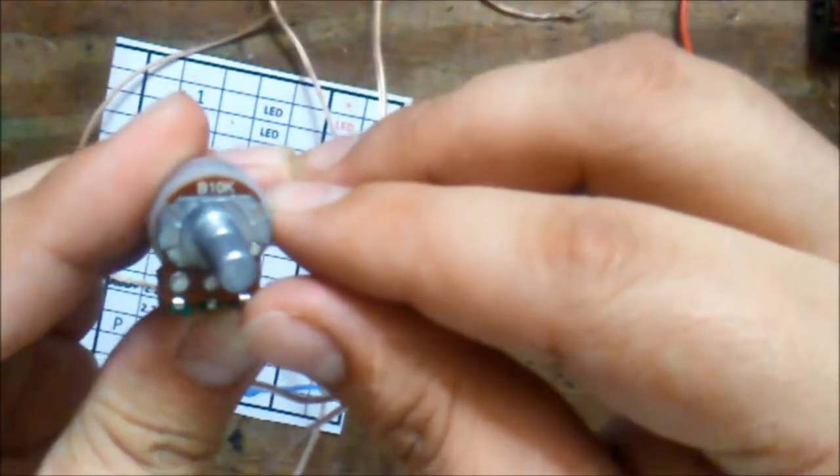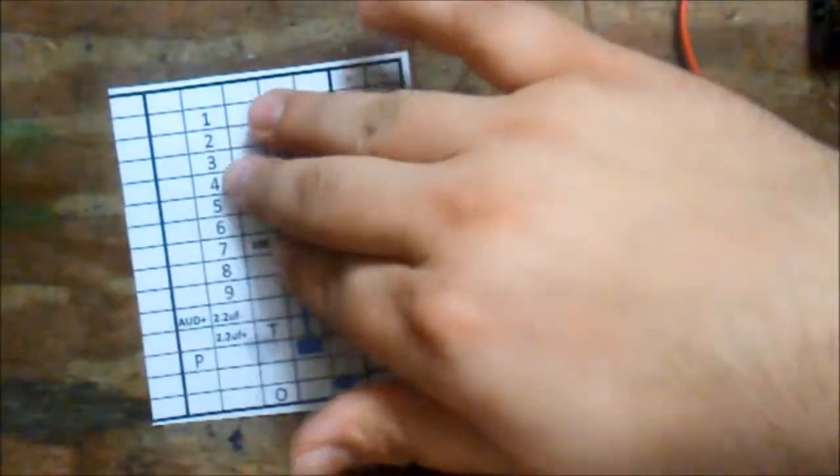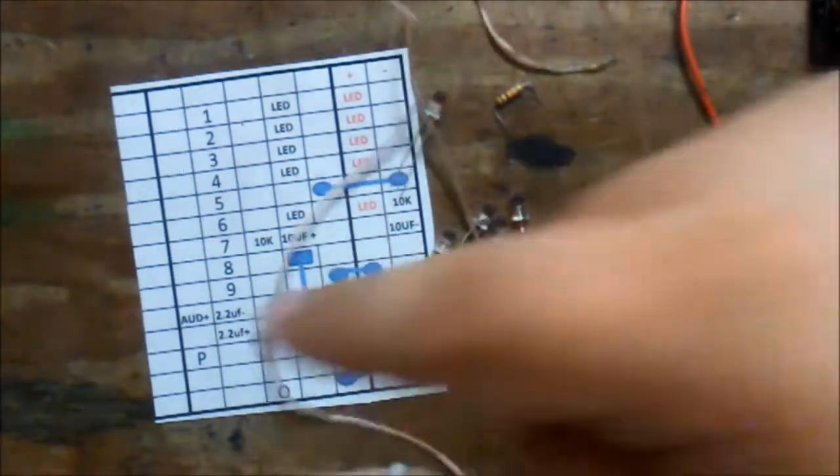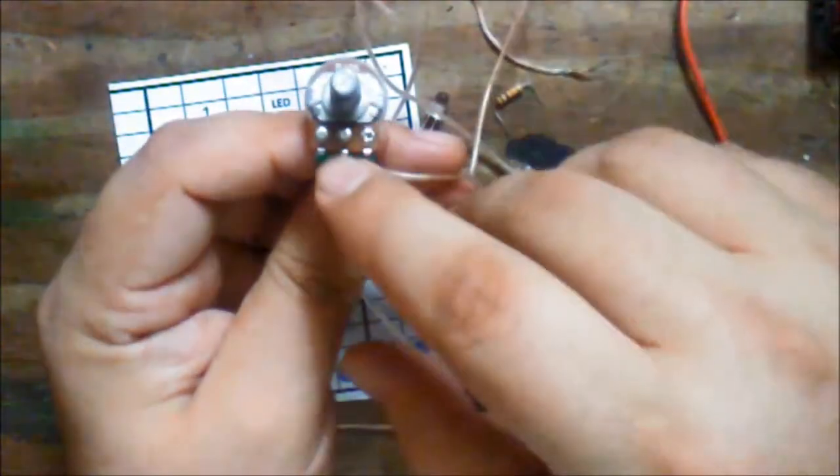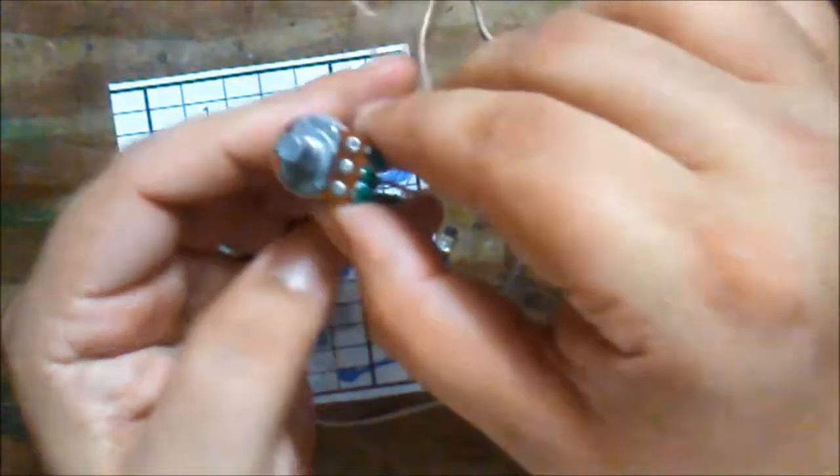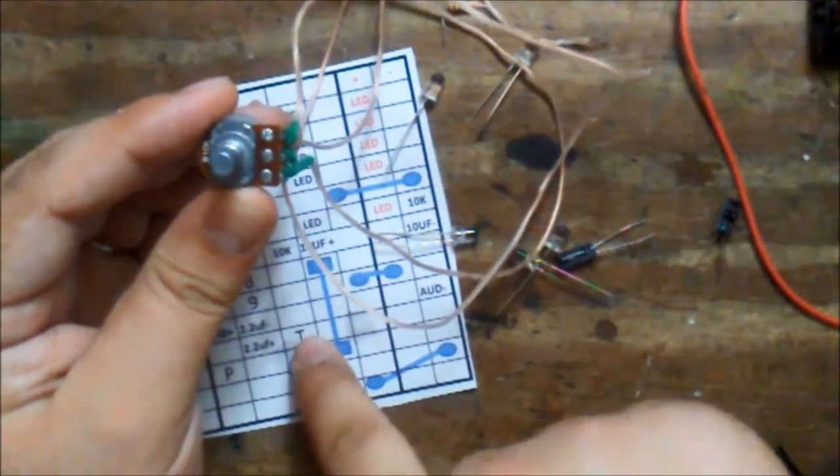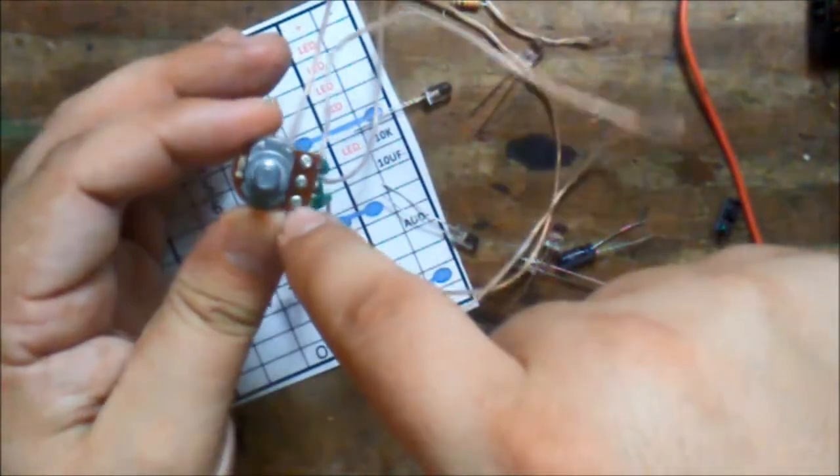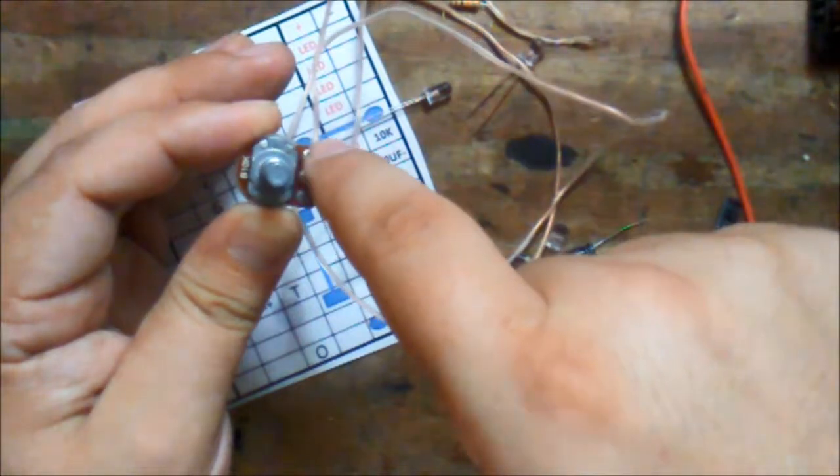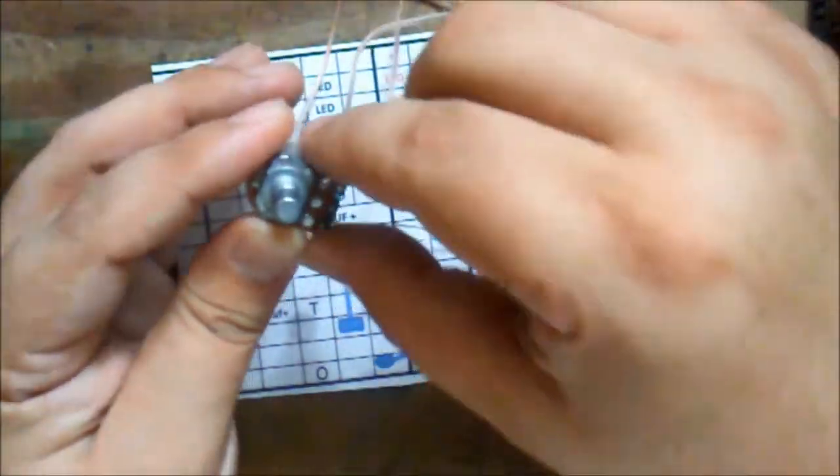And then you have a 10K potentiometer. Now, it has three leads. You're going to see on my paper, it says POT for potentiometer. Now, the P is center. If you turn it this way, it says POT. So, center is P. To the left of the P is O. The far side is T. So, it spells POT.